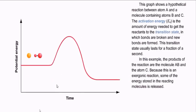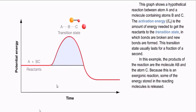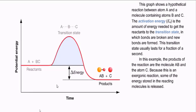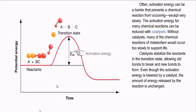This graph shows a hypothetical reaction between atom A and a molecule containing atoms B and C. The activation energy, EA, is the amount of energy needed to get the reactants to the transition state, in which bonds are broken and new bonds are formed. This transition state usually lasts for a fraction of a second. In this example, the products of the reaction are the molecule AB and the atom C. Because this is an exergonic reaction, some of the energy stored in the reacting molecules is released.